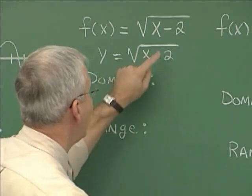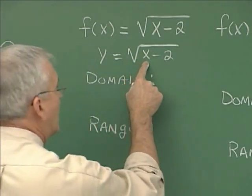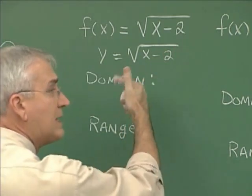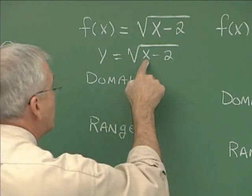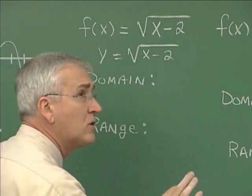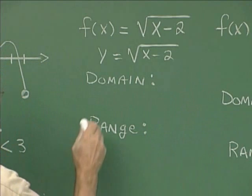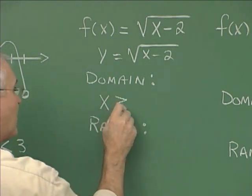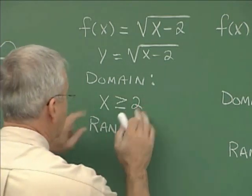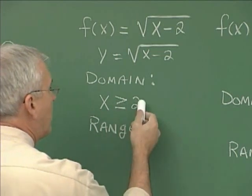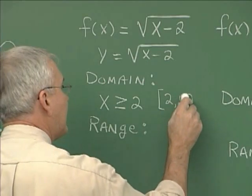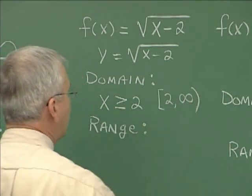For what values is this radicand positive or zero? If x is negative, a negative number minus 2 would be negative, and that's disallowed — we can't take the square root of a negative value. If x is 2, then 2 minus 2 is zero, that's okay, and if x is any number bigger than 2 that's okay as well because the radicand will be positive. So the domain would be x values greater than or equal to 2. In interval notation, it would be from 2 to infinity.